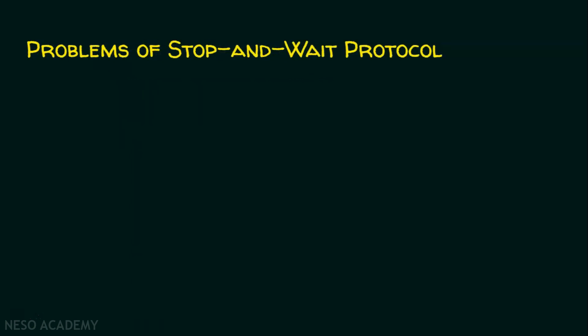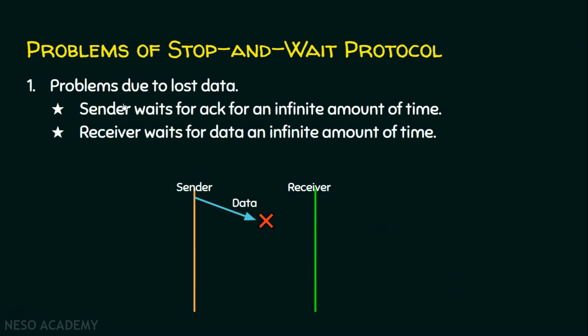The first problem is due to lost data. If the sender sends the data and the data is lost, the receiver will be waiting for a long period of time for the data. Since the receiver has not received the data, it will not send an acknowledgement. Since the acknowledgement is not received by the sender, it won't send the next packet. The sender waits for an acknowledgement for an infinite amount of time, and the receiver is also waiting for the data indefinitely.